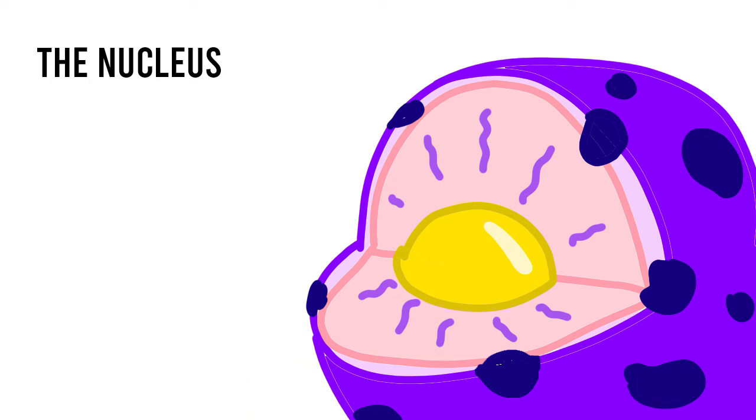The nucleus is a membrane-bound organelle found in eukaryotic cells and is known as the cell's center for its genetic material. The nucleus is crucial for life as the genetic material within it encodes the cell's activity and functions.